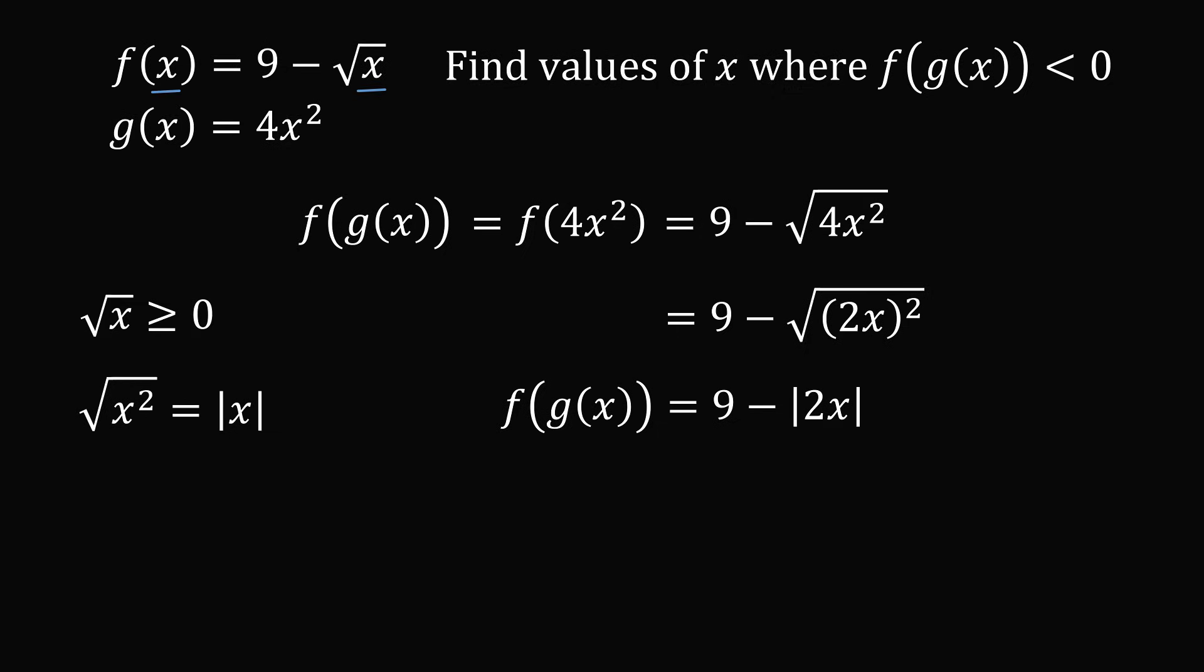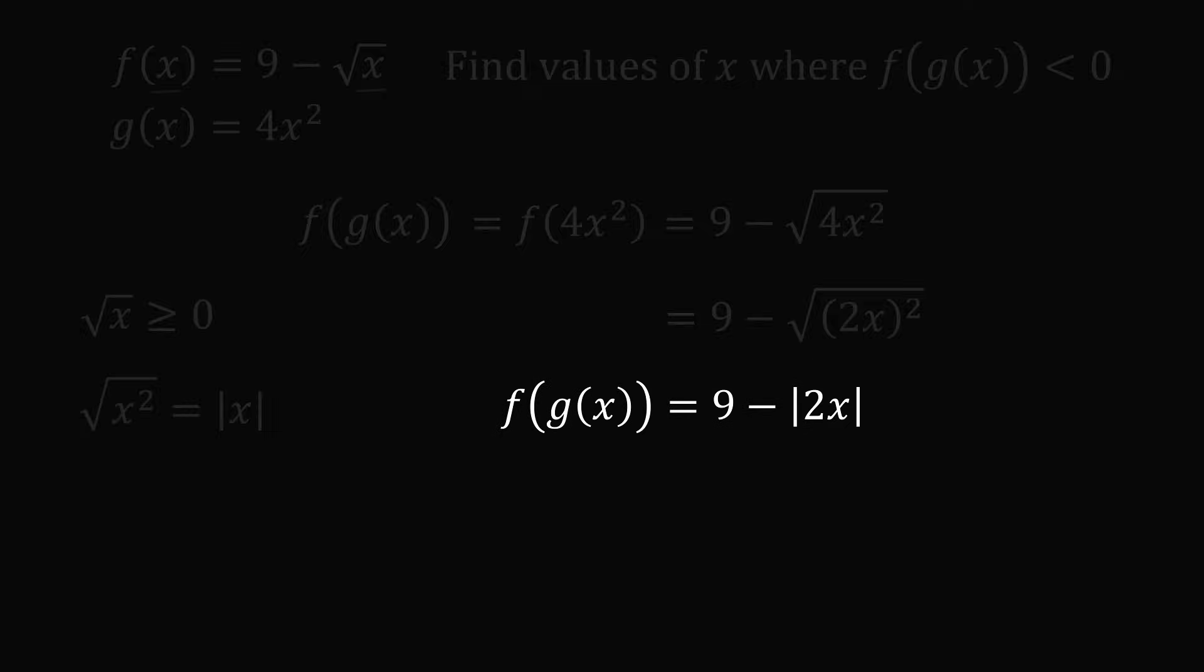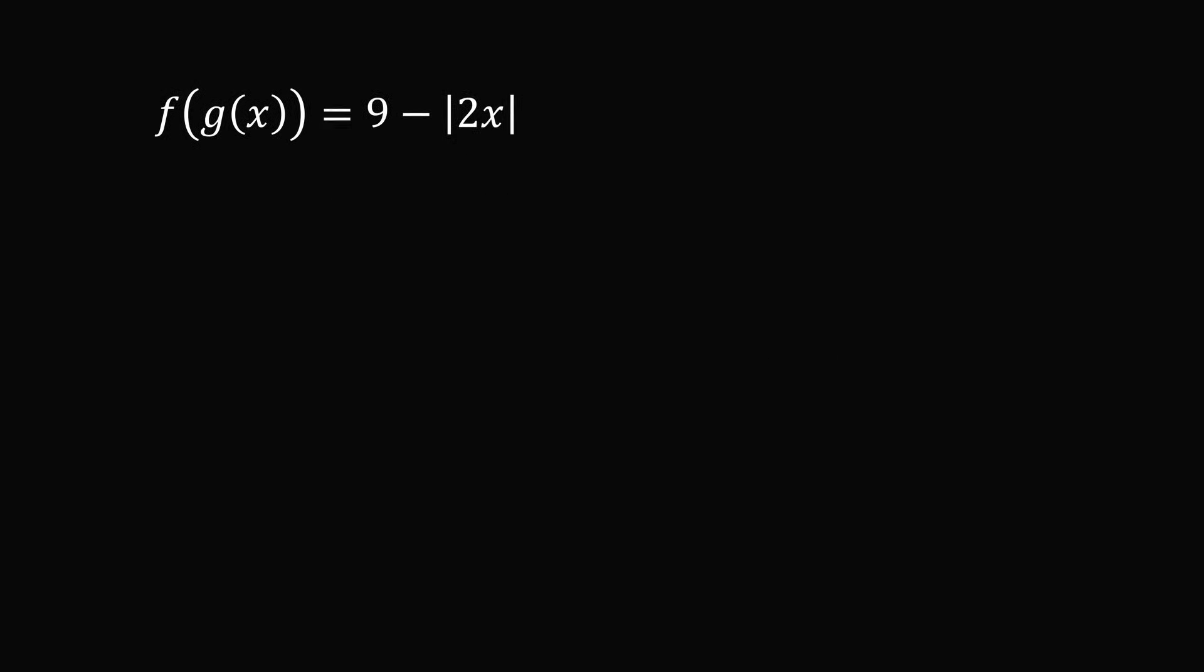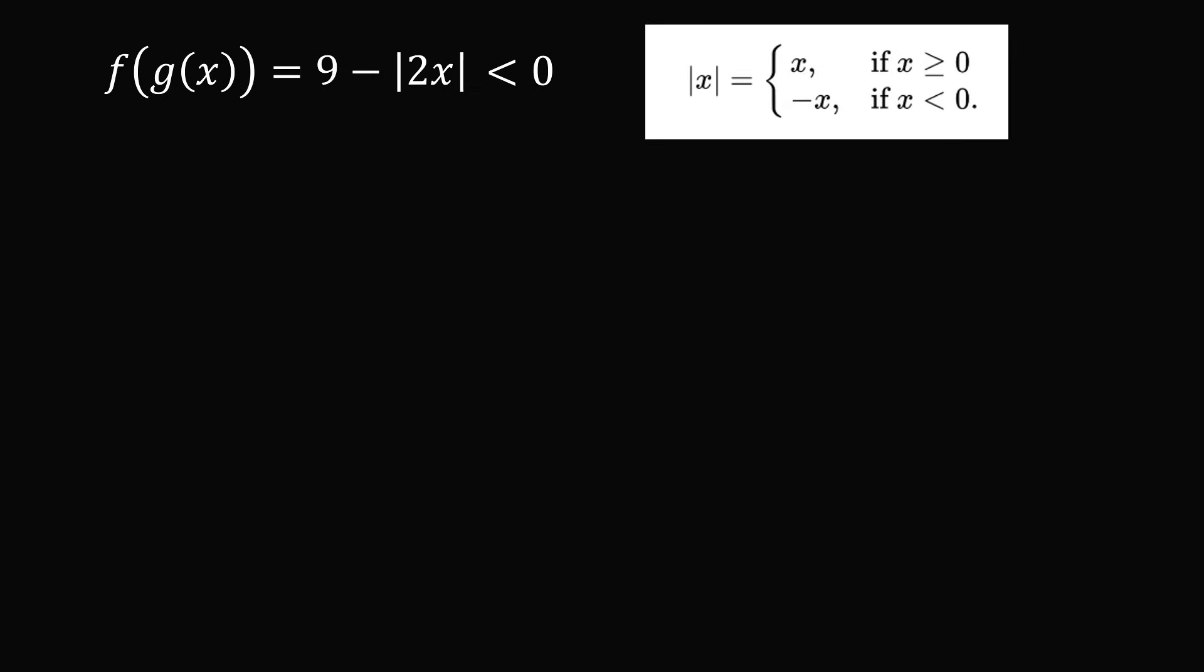We just need to figure out where this is less than 0. Now we have an absolute value so it's best to work in cases. The absolute value function is a piecewise defined function. So in one case let's imagine this entire quantity 2x is greater than or equal to 0. In that case we can get rid of the absolute value sign and we just have 9 minus 2x is less than 0. Let's add 2x to both sides and then divide by 2 so we get that x is greater than 4.5.